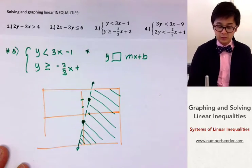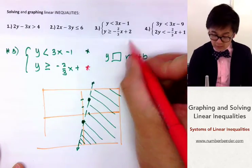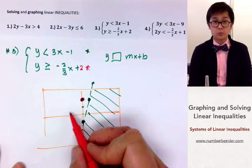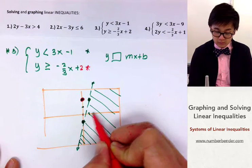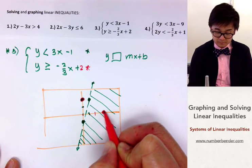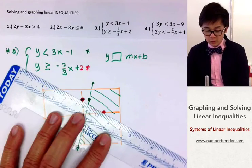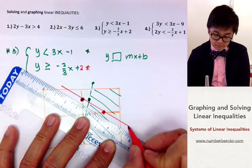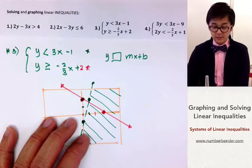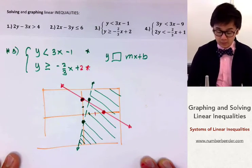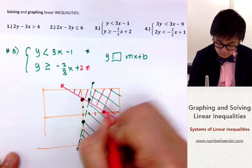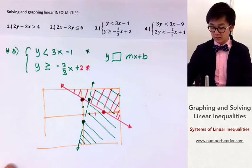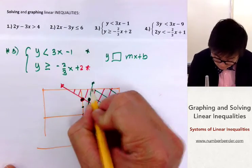We're not finished yet — we need to graph the second line. The y-intercept is positive 2, and since it's a negative slope, we go 2 units down and 3 units across. We draw this as a solid line because it's a greater than or equal to symbol, and we shade above the line. Our final answer is the overlap of the two shaded regions — the green and red regions — which is the intersection of both inequalities.